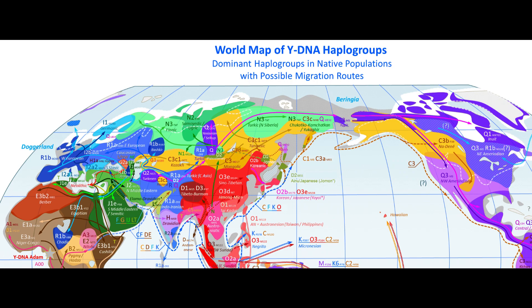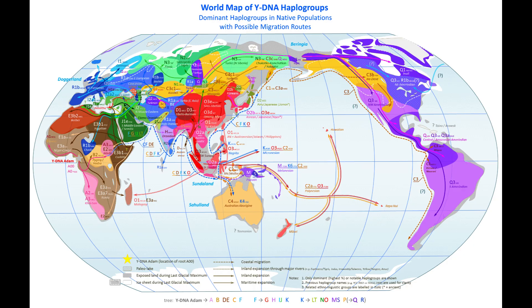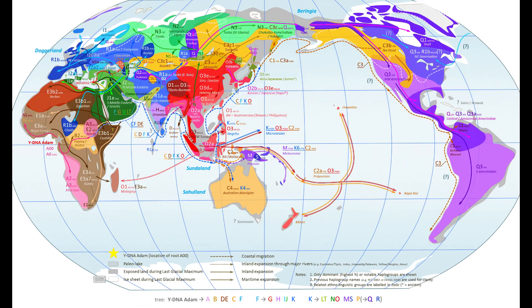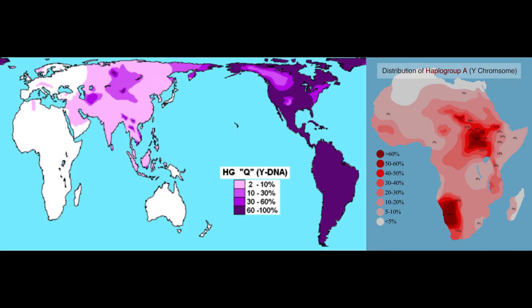Welcome. Modern humans are presented as a mosaic built up by groups. The Amerind group Q and the African group A are suggested as ancestors.